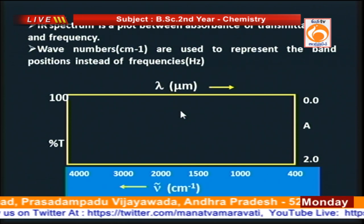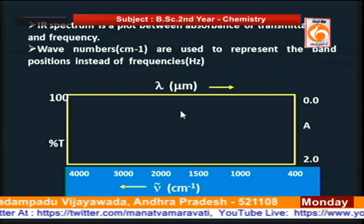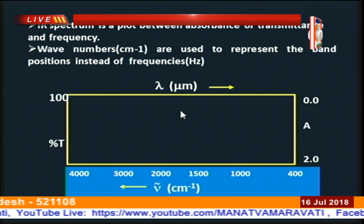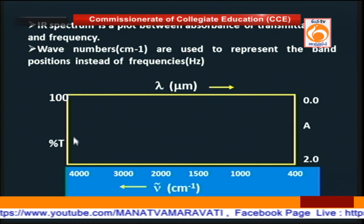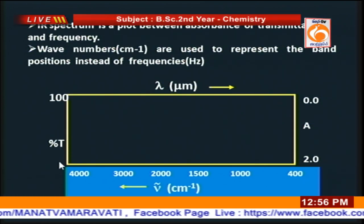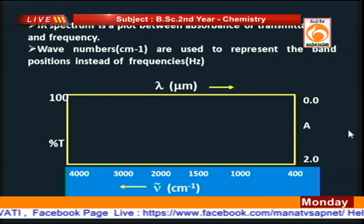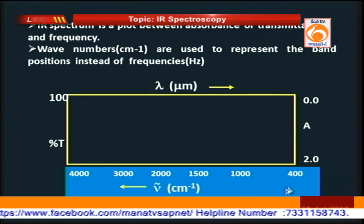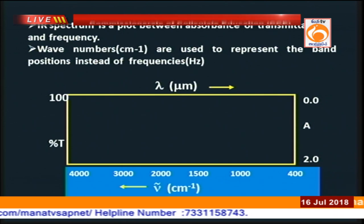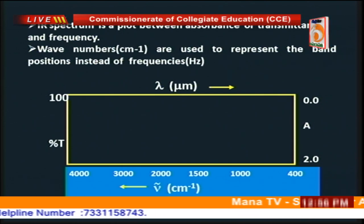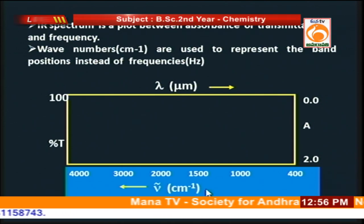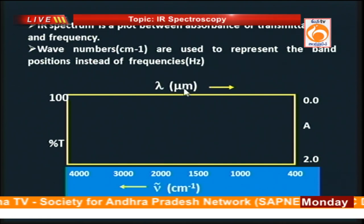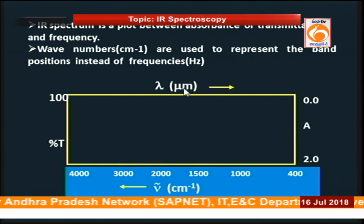This is a common IR spectrum. In the IR spectrum, on the left-hand side we have the transmittance values given in percentages, and on the right side we have the absorbance values. On the bottom of the spectrum we have the wave number values (ν̃), whereas at the top of the spectrum we have the wavelength in micrometers.